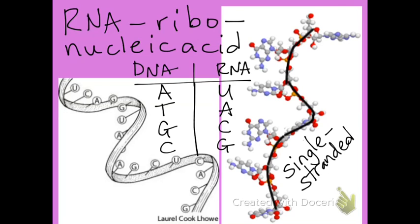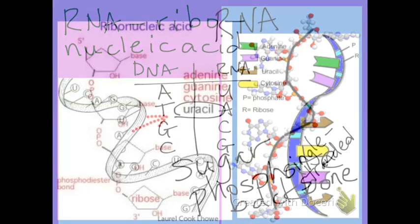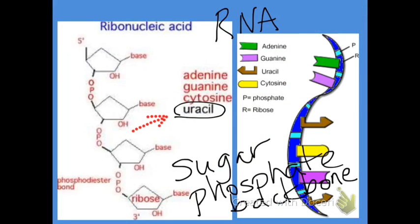RNA stands for ribonucleic acid — the 'ribo' relates to ribose, the sugar. Ribonucleic acid is single-stranded. When RNA binds to DNA: for every DNA adenine, RNA uracil binds with it; for every DNA thymine, adenine binds in RNA; for every DNA guanine, cytosine binds in RNA; and for every DNA cytosine, guanine binds in RNA. The bases of RNA are uracil, adenine, guanine, and cytosine. RNA has just one sugar-phosphate backbone compared to two in DNA.